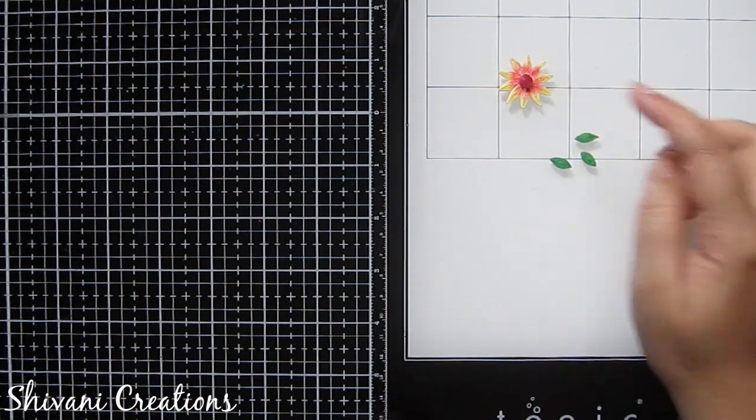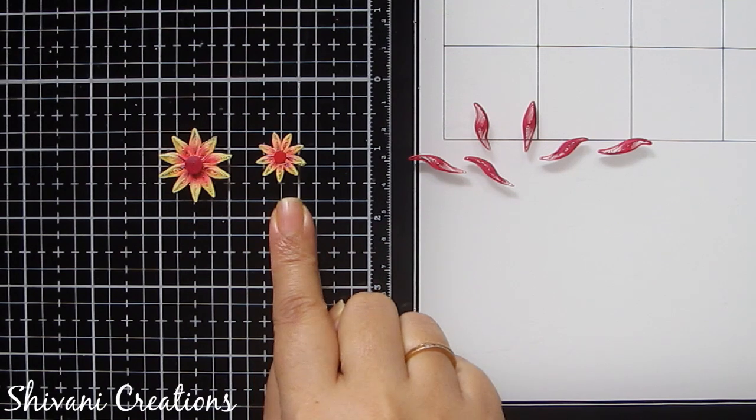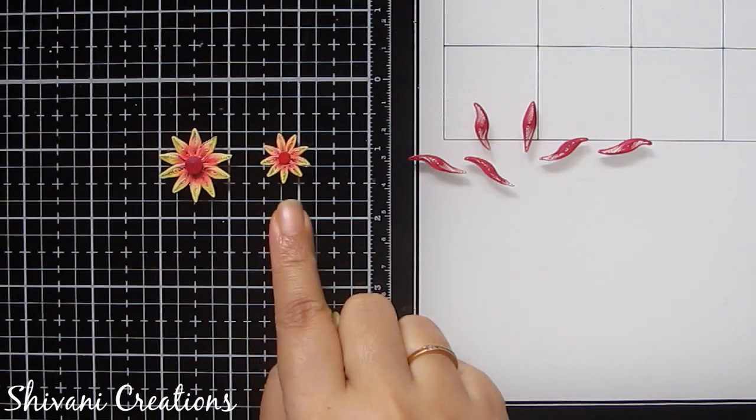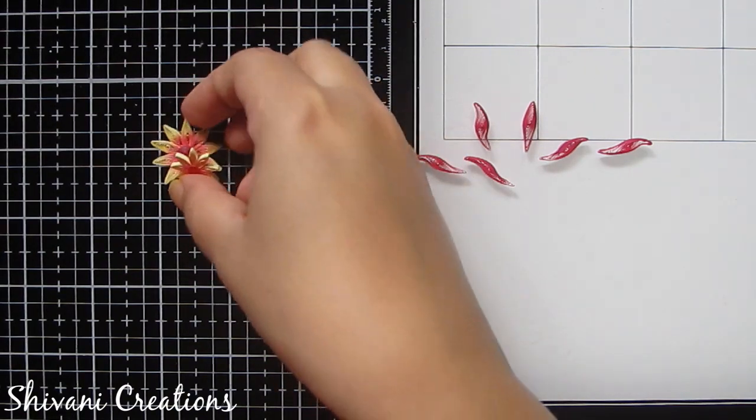So this is done. In the same way I have created one more small flower and for one petal I have used one eighth strip of light yellow color and the process is same.